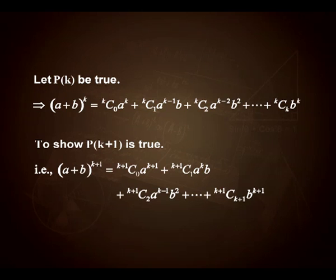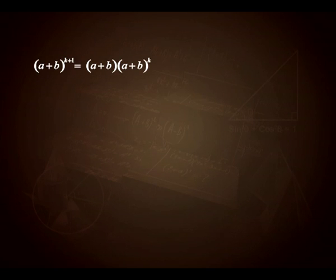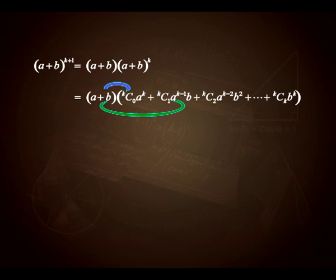I want to show that (a + b)^(k+1) gives the same expansion when n is replaced by k+1. I start by rewriting (a + b)^(k+1) as (a + b)·(a + b)^k. The factor (a + b)^k gets replaced by the expansion we assumed, since the result was assumed true for k. I will not expand blindly — instead, I carefully multiply (a + b) with each term of the expansion of (a + b)^k.